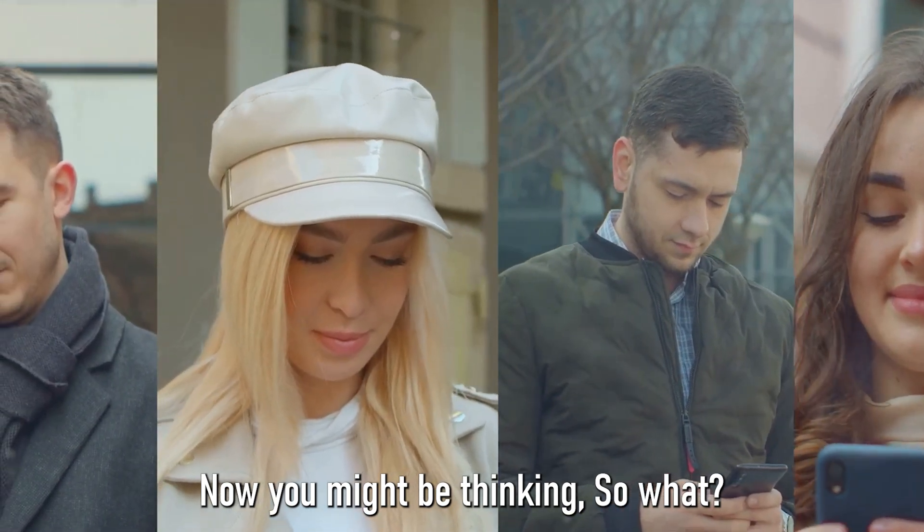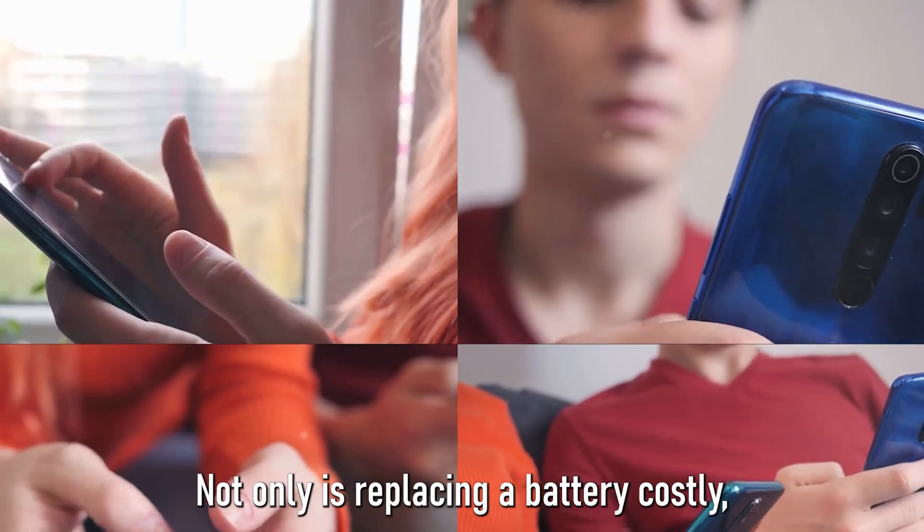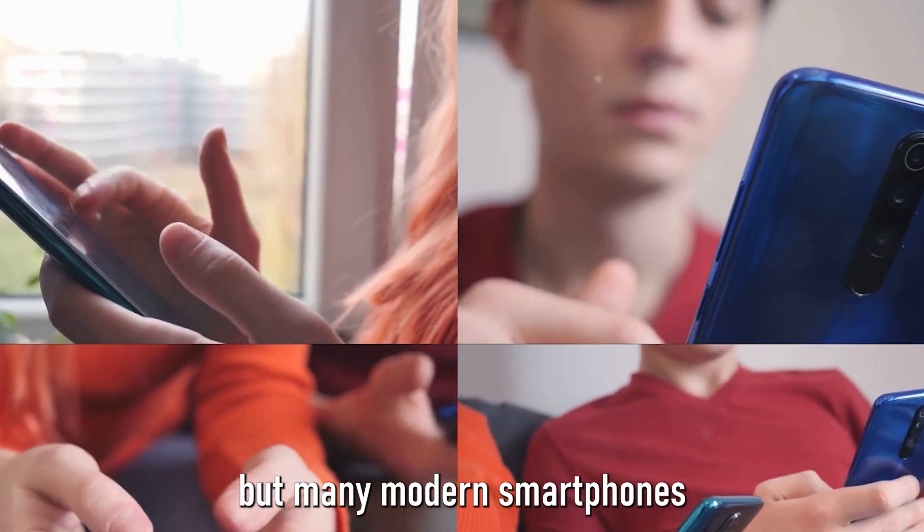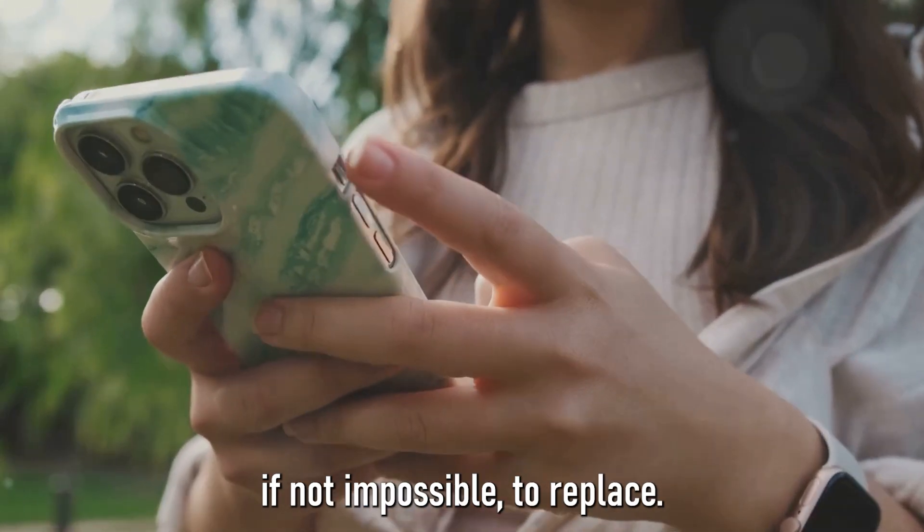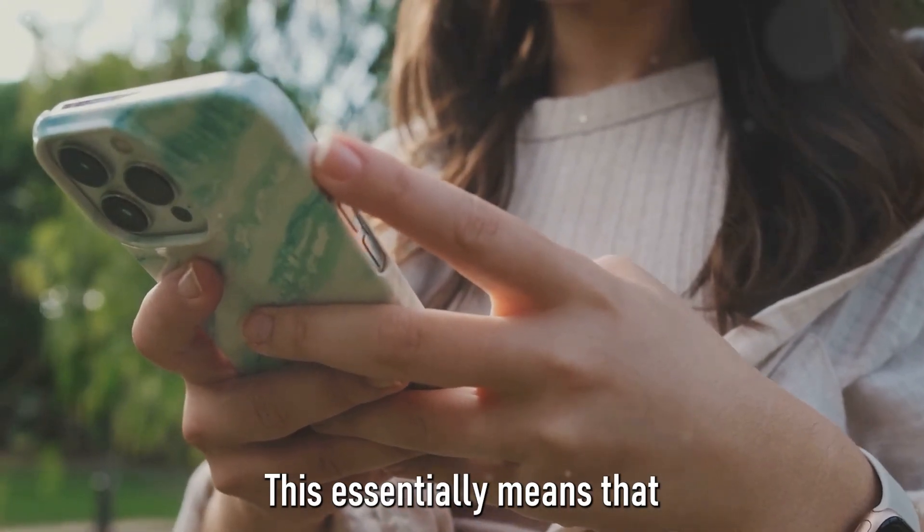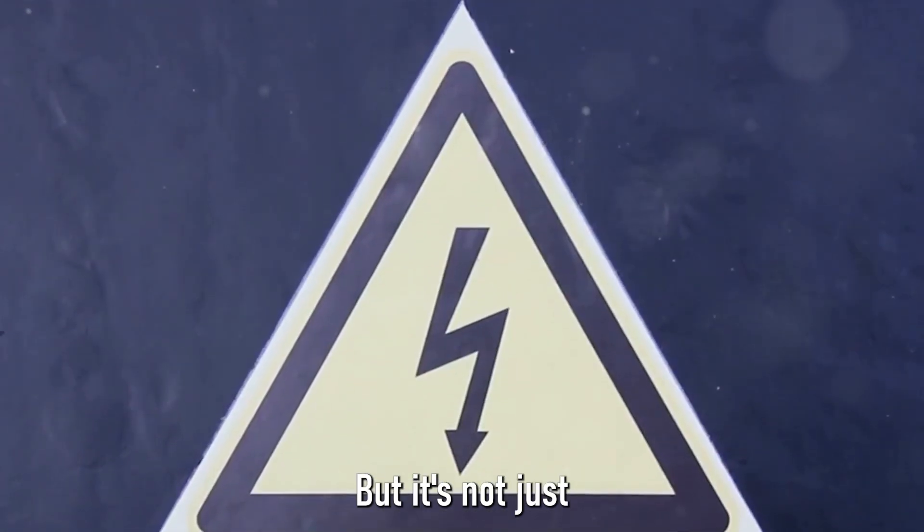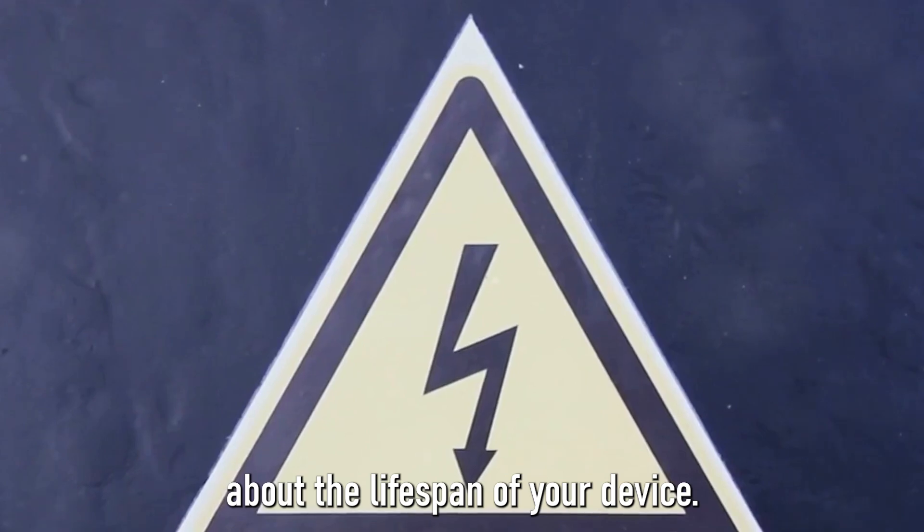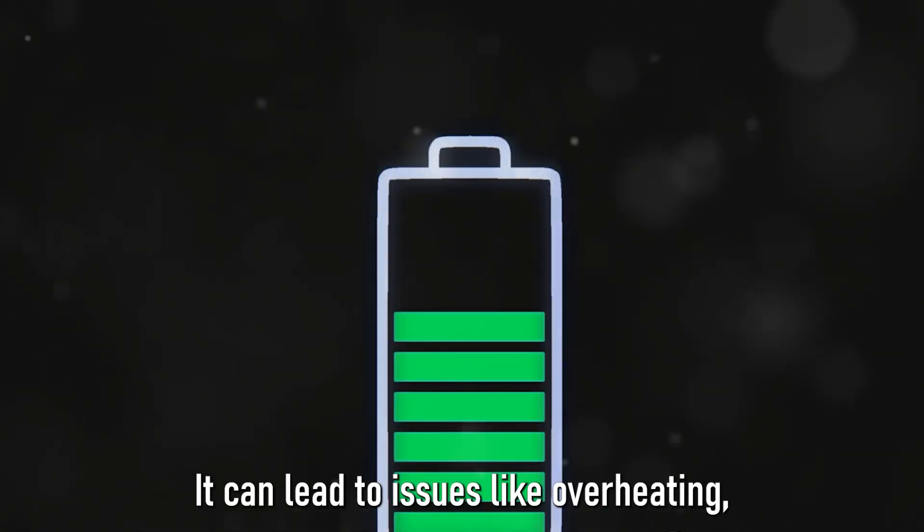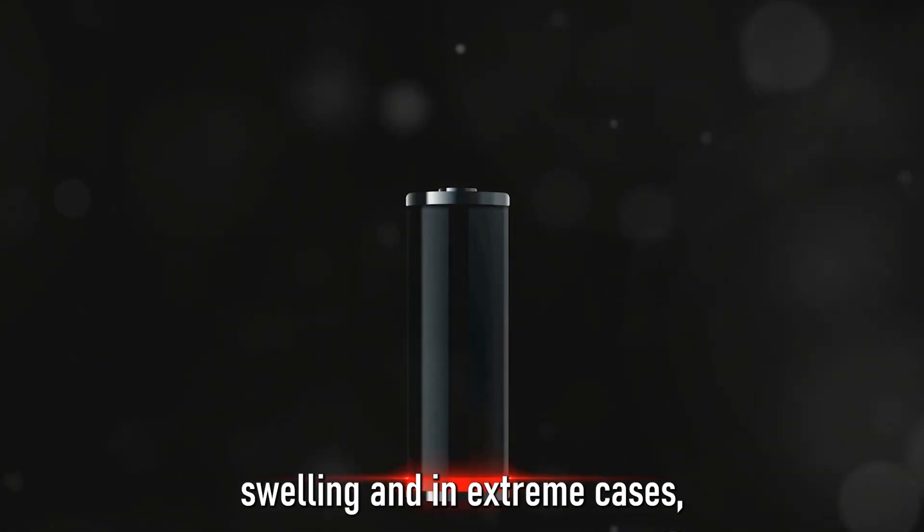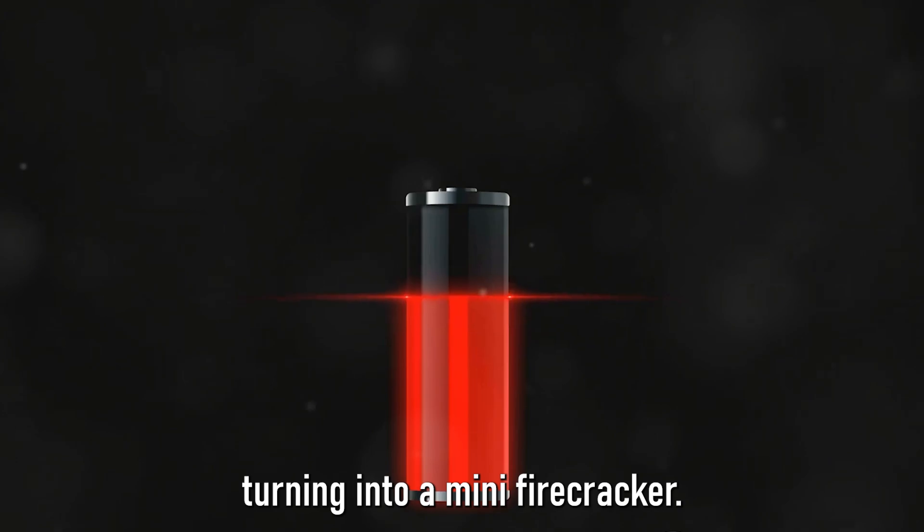Now you might be thinking, so what? I'll just replace the battery when it dies. Well, it's not as simple as that. Not only is replacing a battery costly, but many modern smartphones also have their batteries sealed within the device, making them difficult, if not impossible, to replace. This essentially means that if your battery's lifespan is reduced, so is your phone's. But it's not just about the lifespan of your device. A degraded battery can also pose serious safety risks. It can lead to issues like overheating, swelling, and in extreme cases, even catching fire or exploding. And let's be honest, no one wants their phone turning into a mini firecracker.